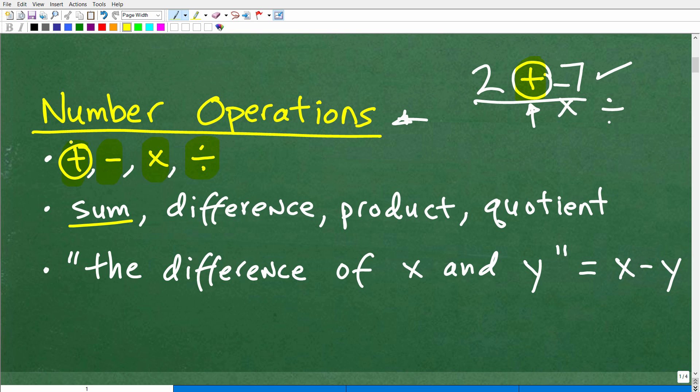But along with these mathematical operators, these number operations, there are specific little words that kind of go along with them. Okay. So the result of adding numbers is something called the sum. Okay. The result of subtraction is something called the difference. The result of multiplying numbers is something called the product. And then the result of division is something called the quotient.